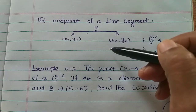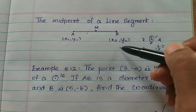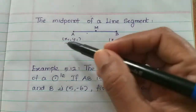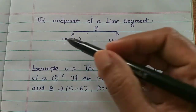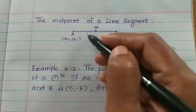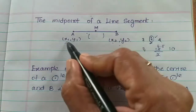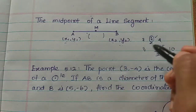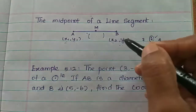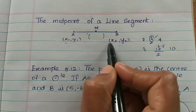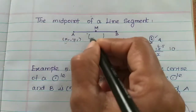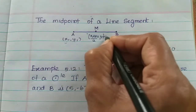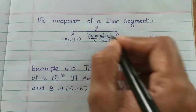Now let's see how we use coordinate geometry with x, y coordinates — x1, y1, x2, y2. So for two points, what do we do? x1 plus x2 divided by 2, and y1 plus y2 divided by 2. That's very simple. The formula is: add the numbers and divide by 2. So x1 plus x2 by 2, y1 plus y2 by 2 — this is the midpoint formula.